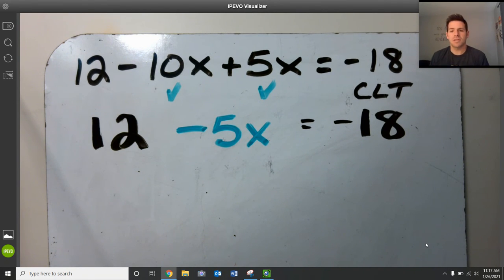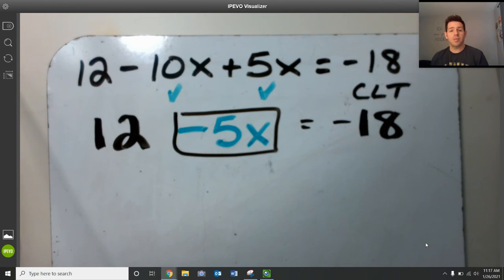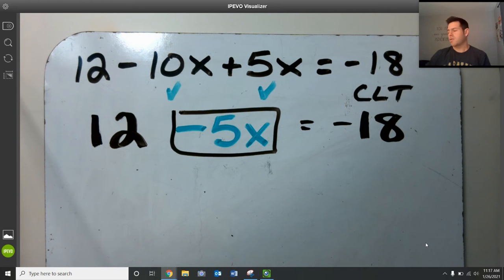Now this looks like a two-step equation like we've done before in the past. This is a scenario where I have a constant and a variable on one side. Again, remember my ultimate goal is to isolate that variable when solving equations. So I want to take whatever constant I have to the other side. And here it's a 12.